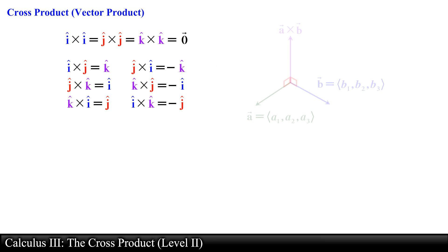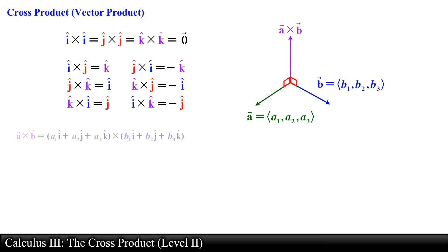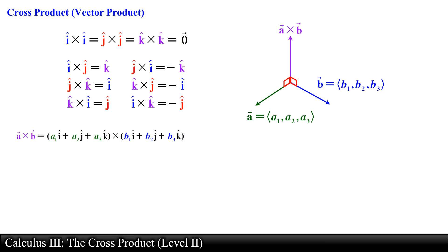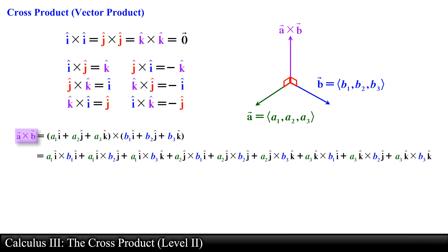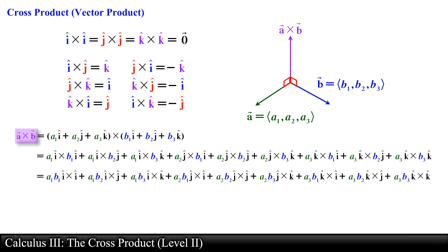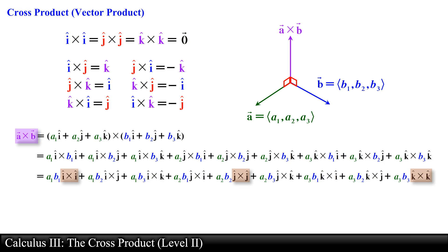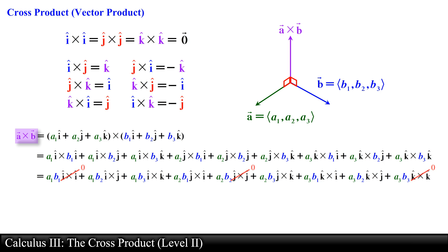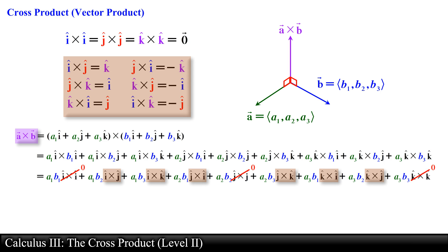Next we express vector A and vector B in terms of their components and the corresponding unit vectors. Then we go ahead and find vector A cross vector B by distributing the components. We then rewrite the individual terms, and go ahead and compute the cross product of all nine terms. Three of the terms will be equal to the zero vector since these involve a unit vector crossed with itself. The remaining six terms will be equal to a unit vector or the negative of a unit vector, depending on the order in which the unit vectors are crossed.